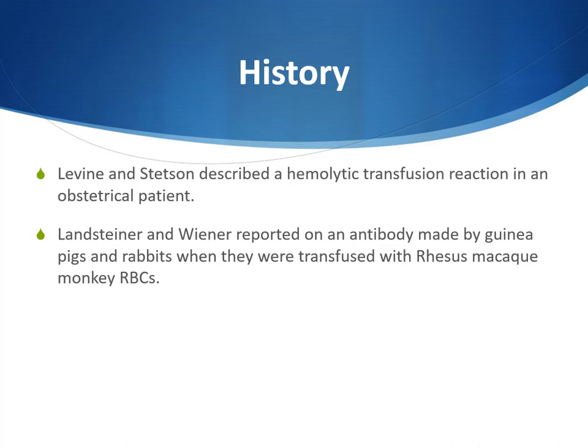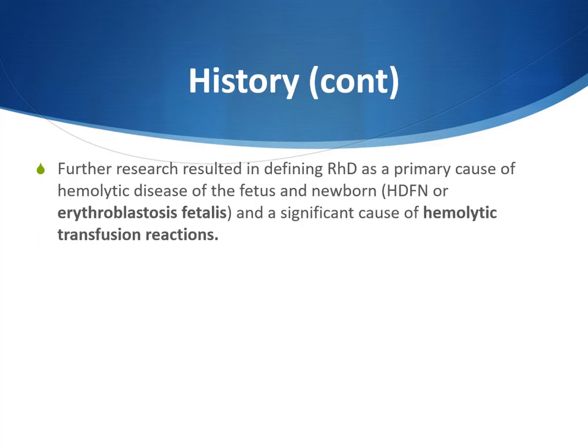Rh is the second most important blood group system after ABO. Although the common term Rh refers to the D antigen, the Rh system has over 50 different antigens. When we say someone is Rh-negative or Rh-positive, we are only referring to the presence or absence of the D antigen. Levin and Stetson were the first to describe anti-D in an obstetrical patient. After a stillborn baby was delivered, the mother was transfused with the husband's same ABO blood type, resulting in an acute hemolytic transfusion reaction.